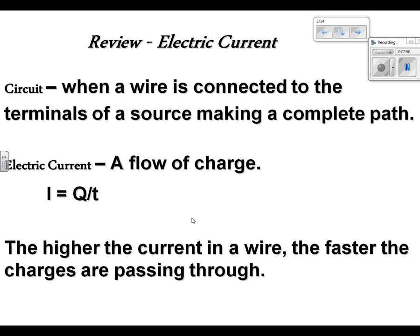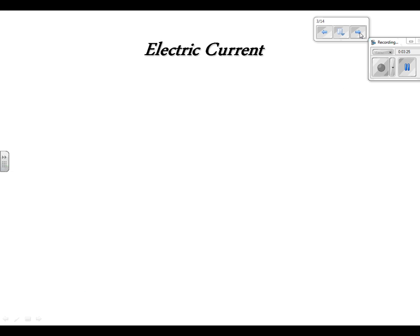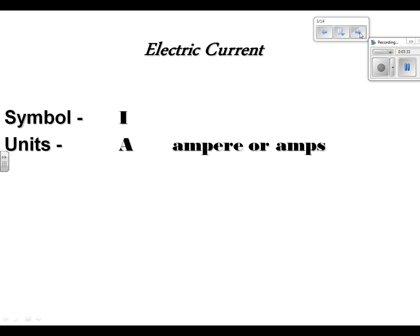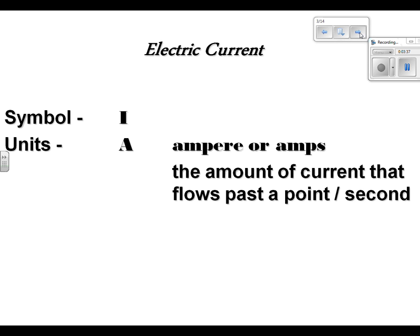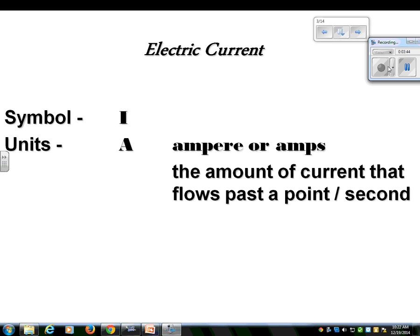So, electric current is a flow of charge, or I equals Q over T. The higher the current in a wire, the faster the charges are passing through. And you're going to see that after the holidays, when we build circuits online, you're going to see the electrons moving faster through the wires. The symbol for current is I. Units for current, amps. The amount of current that flows past a point per second. That's the definition of current.